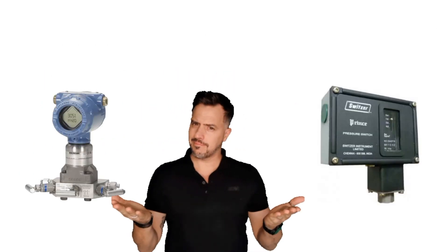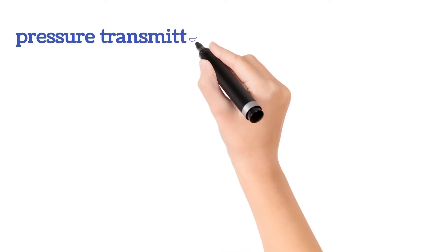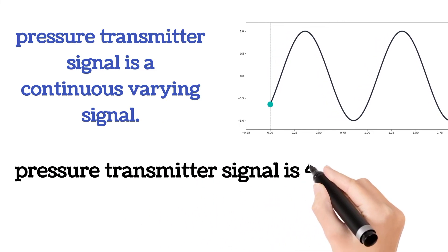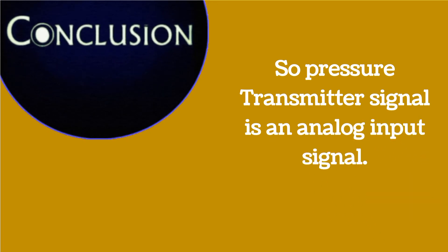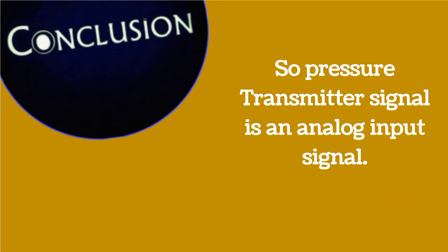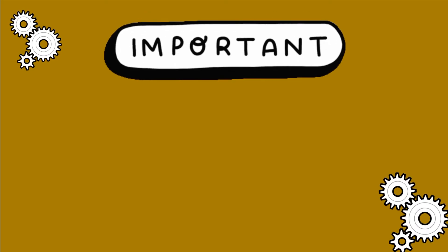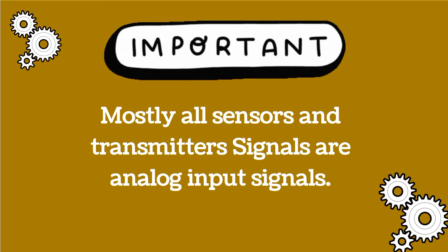The pressure transmitter is on the left and the pressure switch is on the right. The pressure transmitter signal is a continuously varying 4–20 mA signal. The conclusion is that the pressure transmitter signal is an Analog Input (AI) signal, because it measures pressure and varies over a range. An important point to remember: mostly all sensor and transmitter signals are analog input signals.